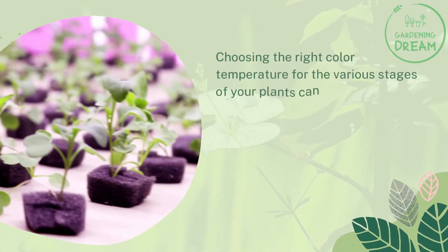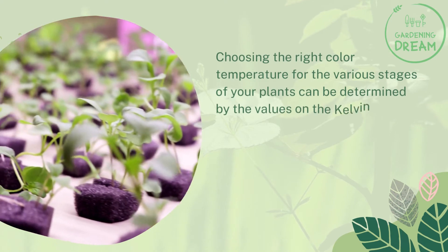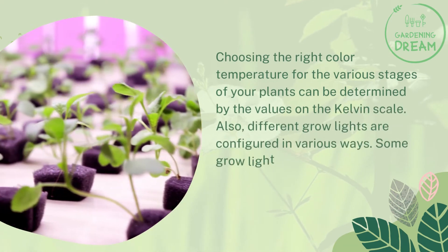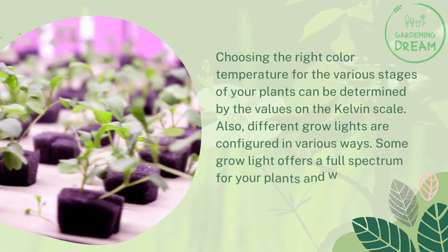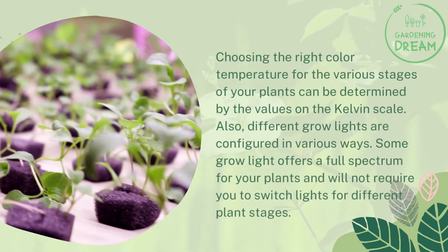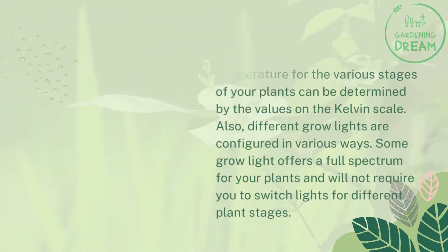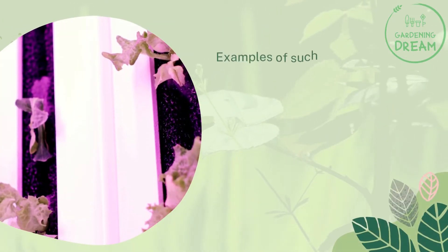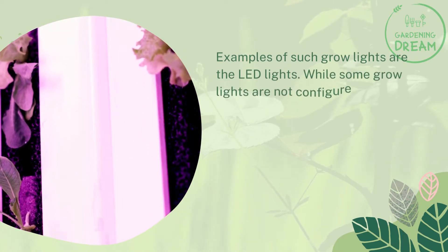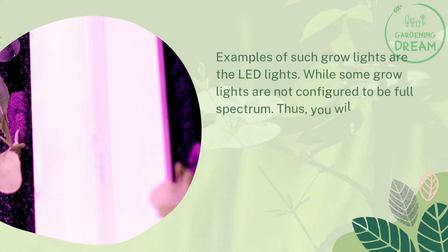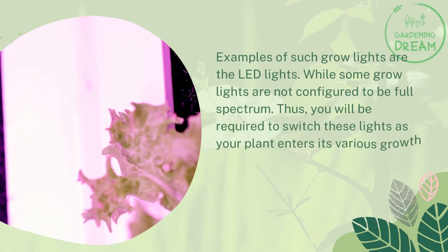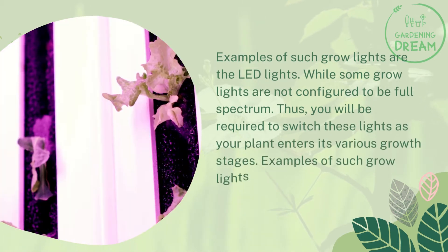Choosing the right color temperature for the various stages of your plants can be determined by the values on the Kelvin scale. Some grow lights offer a full spectrum for your plants and will not require you to switch lights for different plant stages — examples of such grow lights are LED lights. While some grow lights are not configured to be full spectrum, you will be required to switch them as your plant enters its various growth stages.